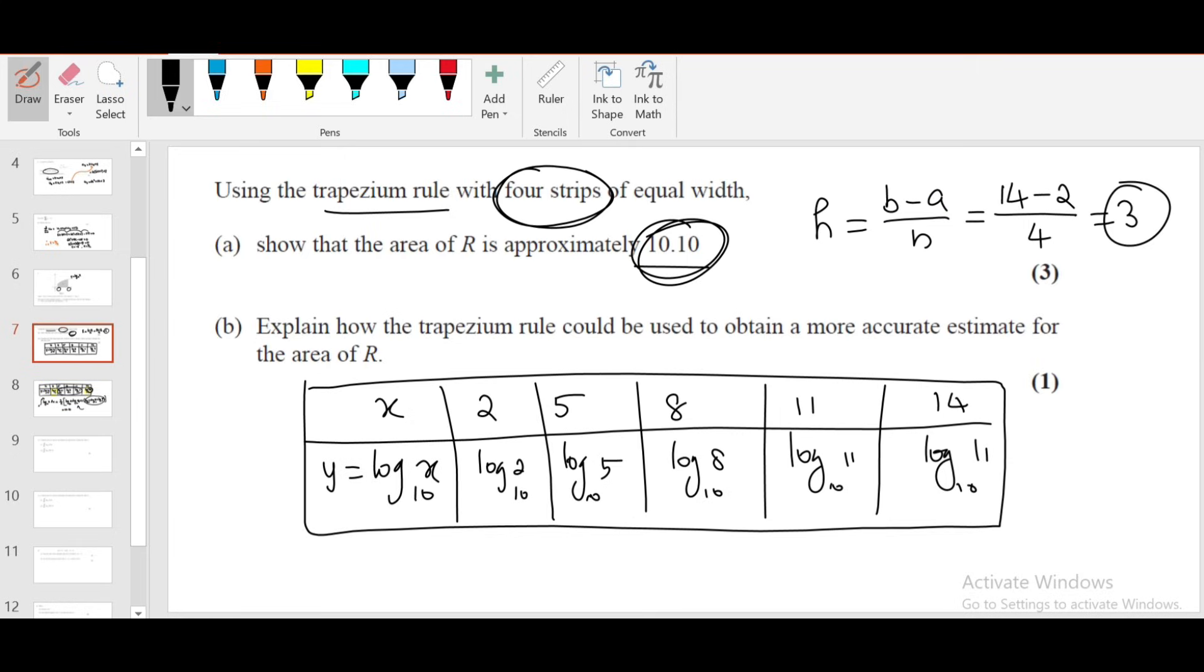Part B: Explain how the trapezium rule could be used to obtain a more accurate answer. It's a common question. Just write: increase the number of strips.